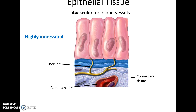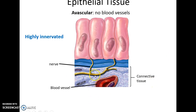Epithelial tissue is avascular — it has no blood vessels going through it. However, it is highly innervated, with lots of nerves interacting with it to activate receptors. It is often next to connective tissue, where blood vessels bring the nutrients it needs.